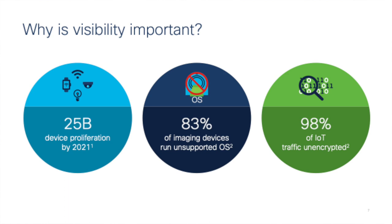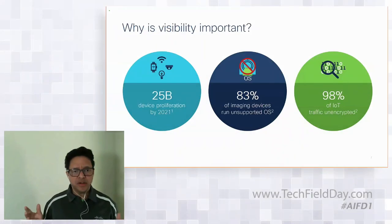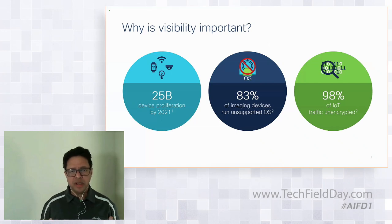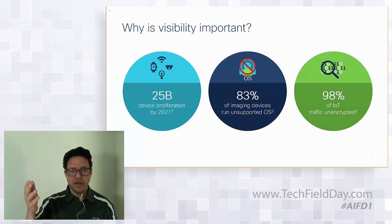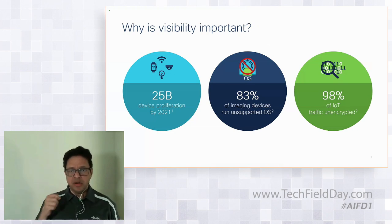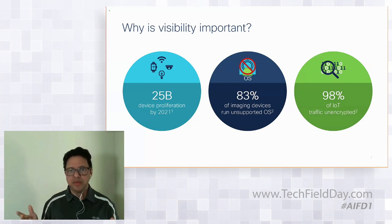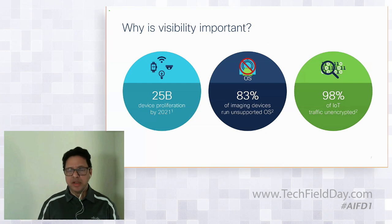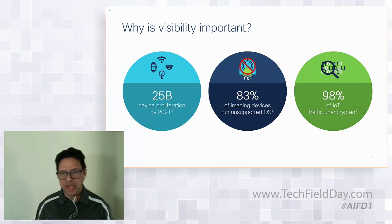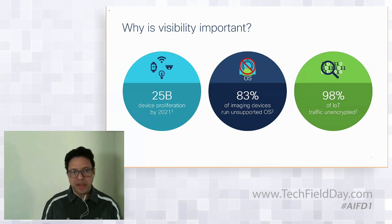Why is visibility important? With the explosion in the number of IoT devices, we see them everywhere. Pre-COVID, as you enter a building you encounter surveillance cameras, door locks, badge readers. Your iPhone connects to Wi-Fi, you walk to the elevator — the building management system, temperature controller. In the conference room there's a telepresence unit, conferencing unit, and many more IoT devices around you.